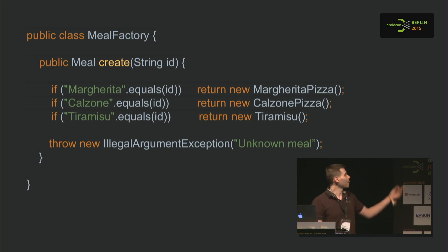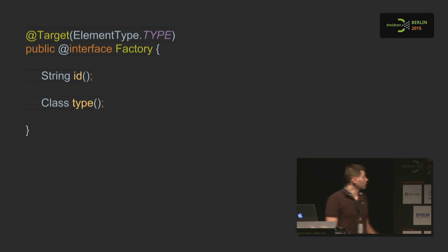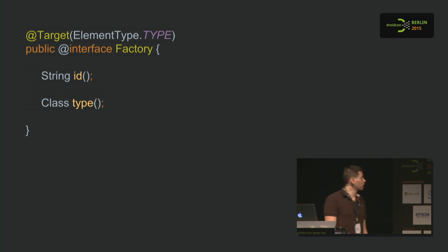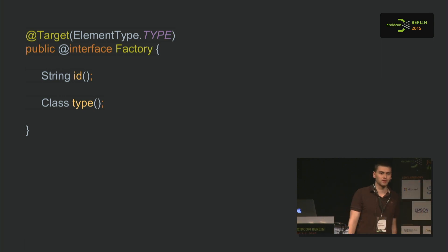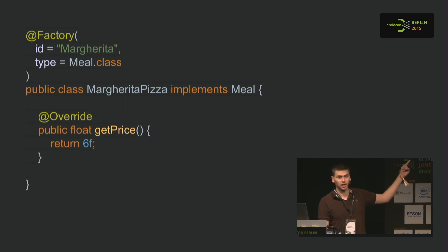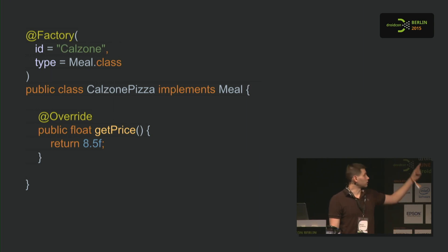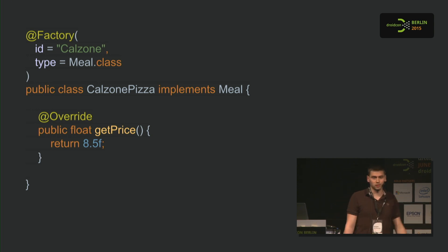First, we define our annotation — @Factory. We say we have a string ID, which is basically what the user types in, like 'margherita' or 'tiramisu'. Then we define a type — for instance, Meal.class. Everything with the same type gets grouped together into one factory. Calzone would look like this, and Tiramisu is pretty much the same.